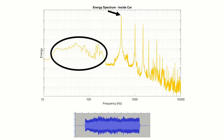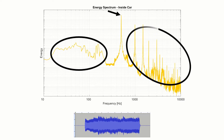This beat corresponds to the frequency of the horn and these other peaks are harmonic frequencies of the horn. The highest energy peak is at a frequency of 500 hertz, which is the horn's nominal operational frequency.